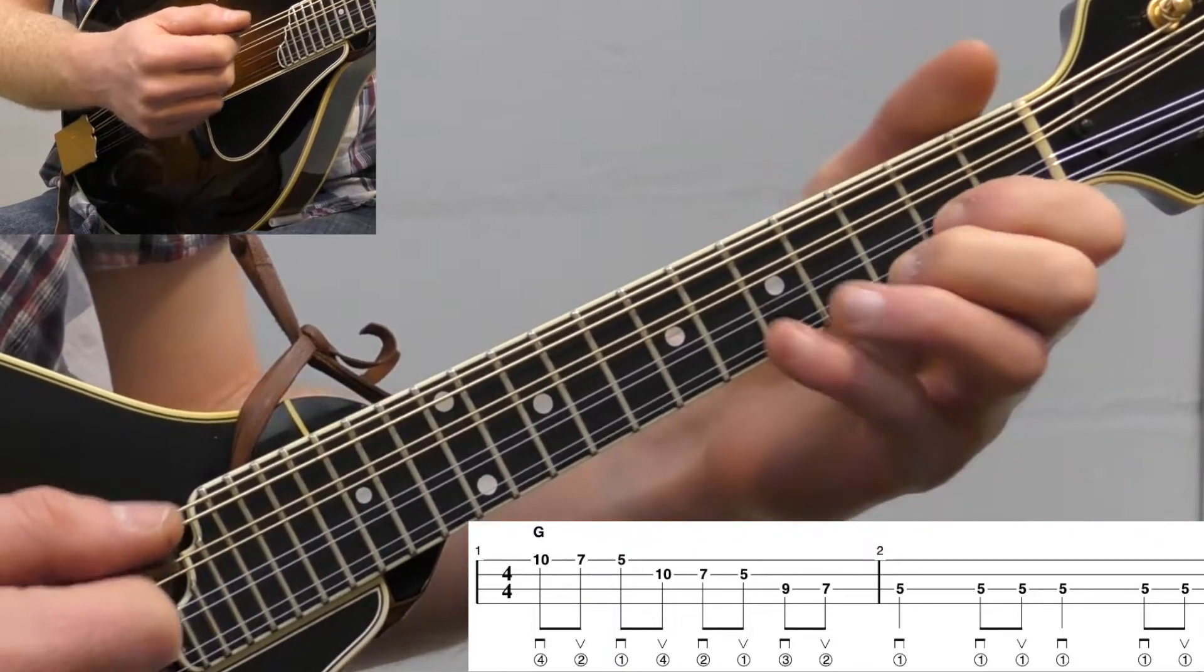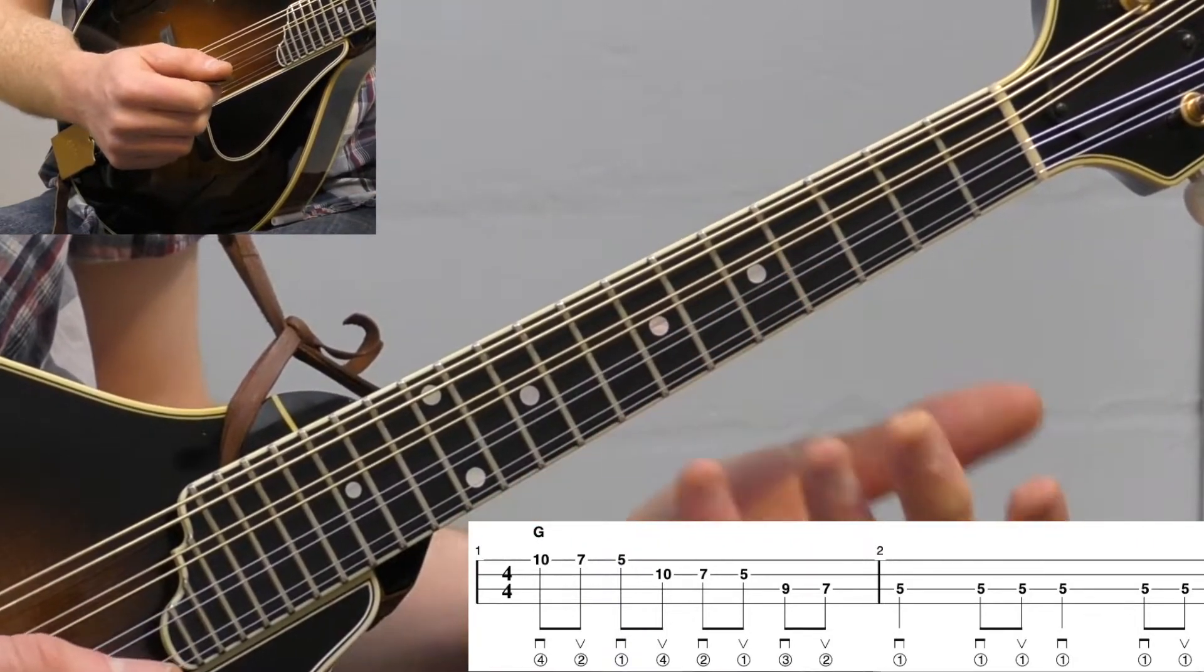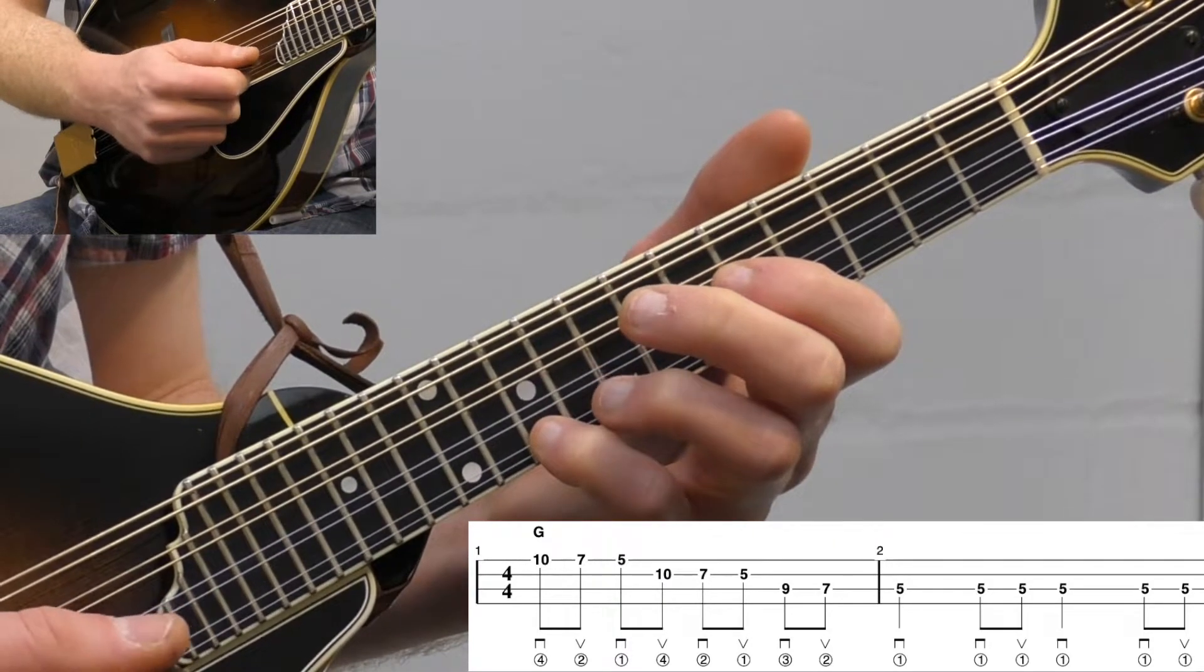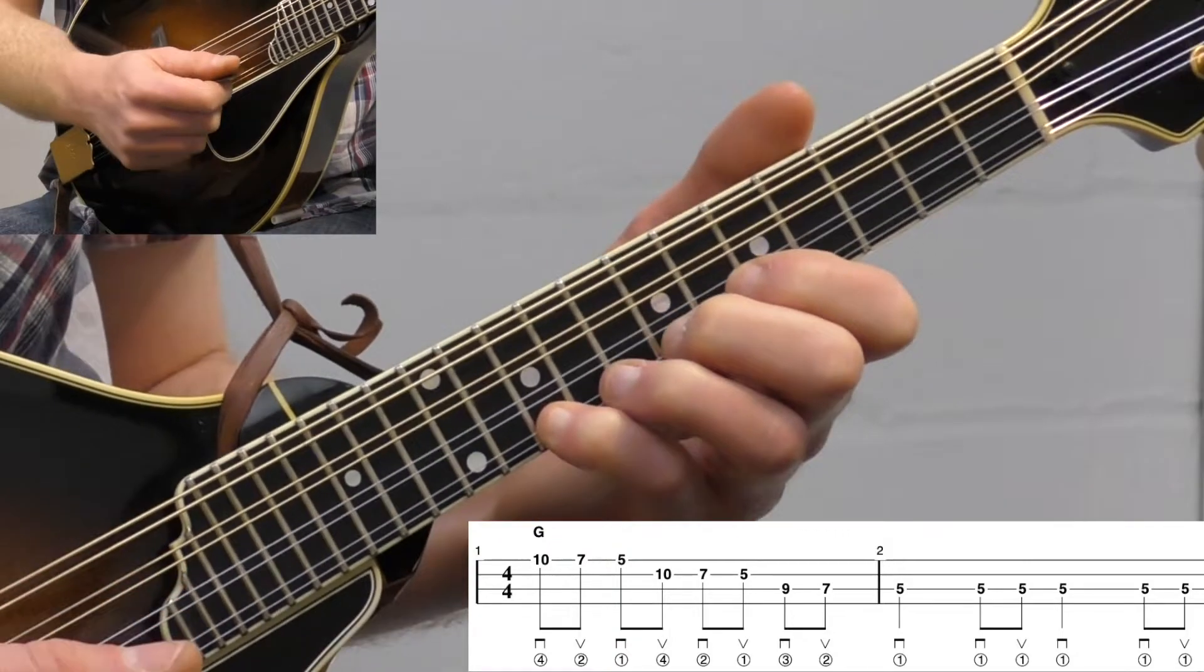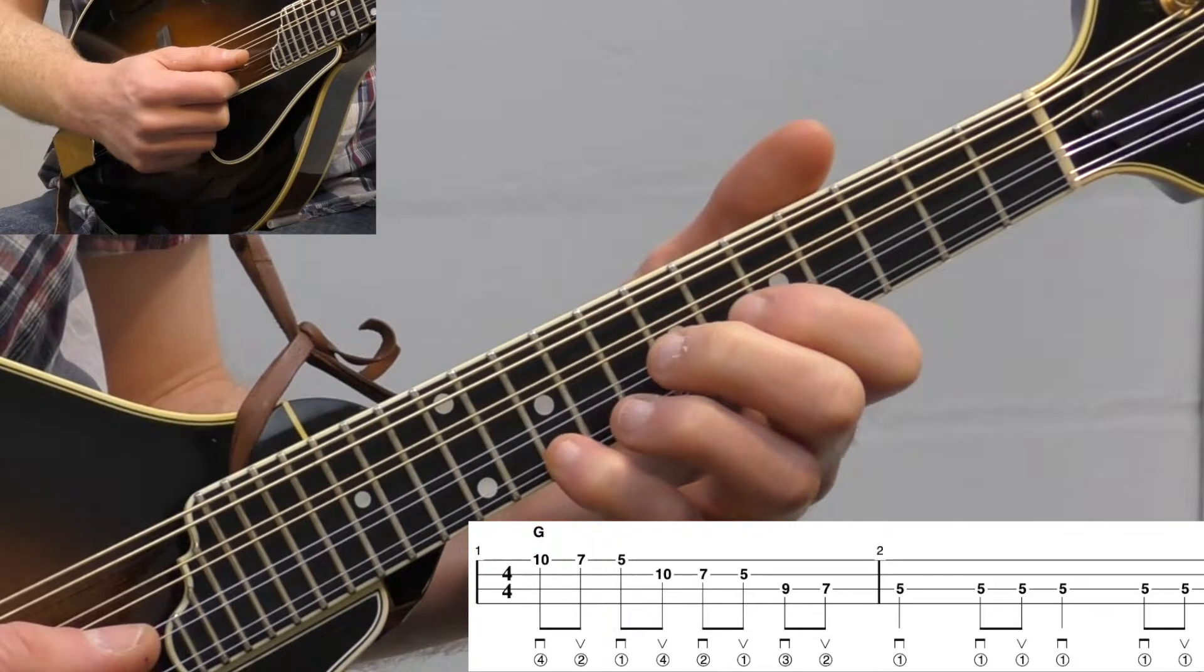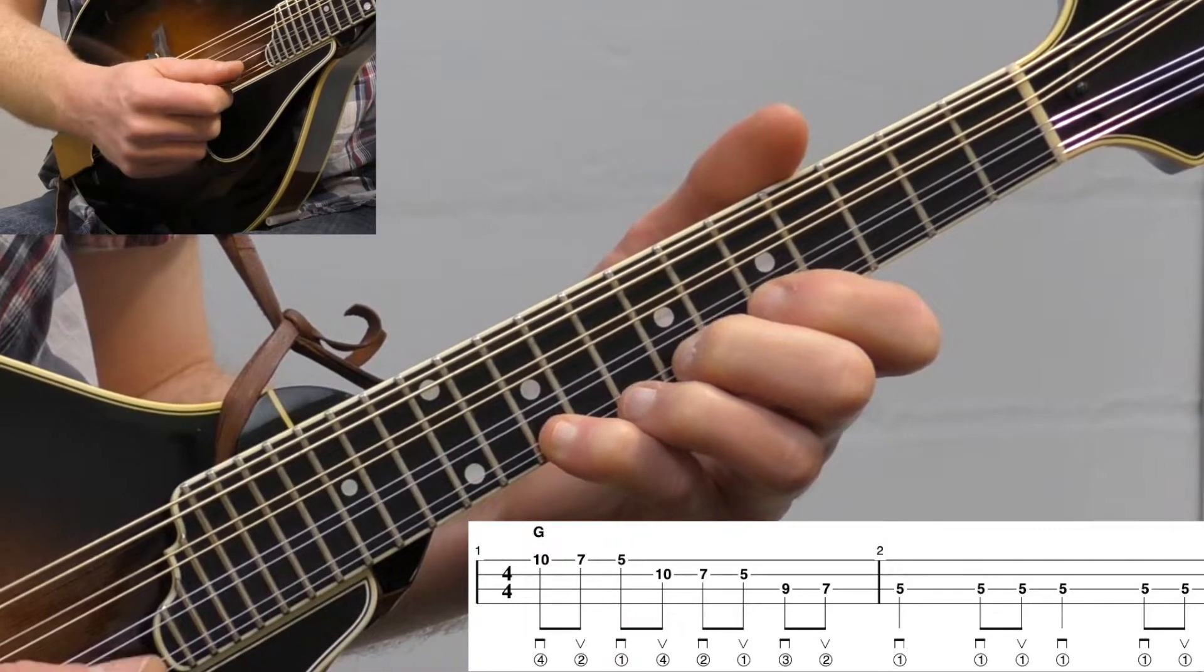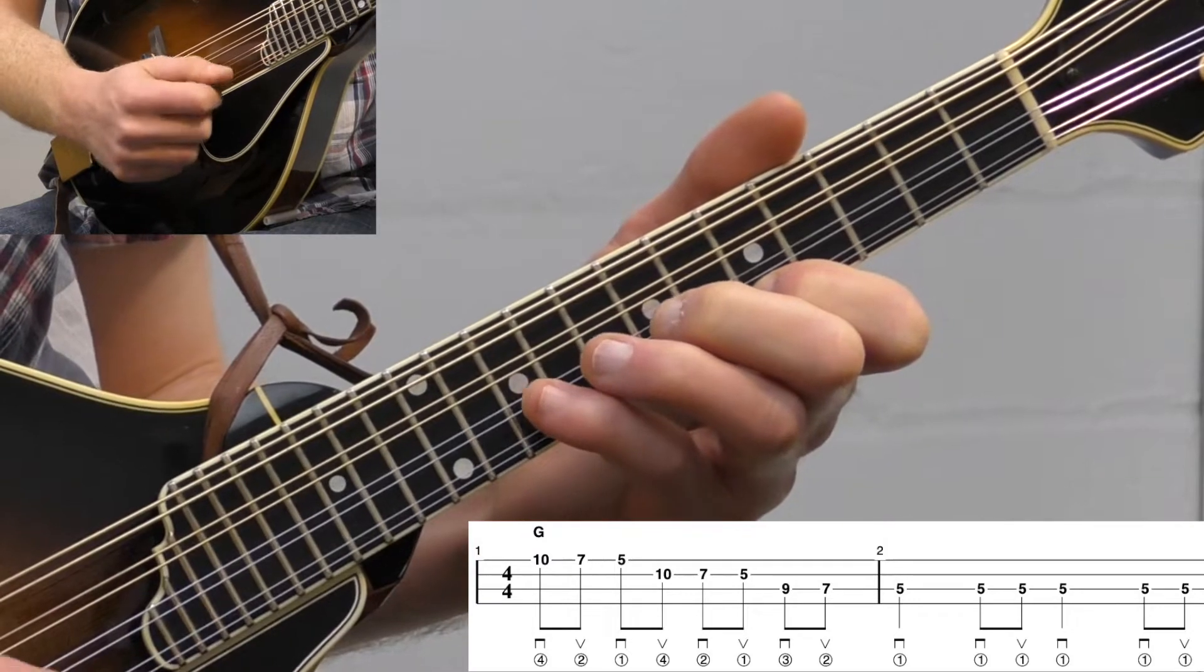We're going to start with our pinky. Let's do it in G first, the key of G. So we're going to start with our pinky of our left hand up on the 10th fret of the E string, the high E string. And we're going to do, this is going to be good pinky practice for this lick.